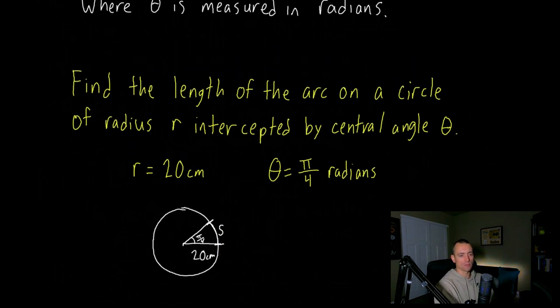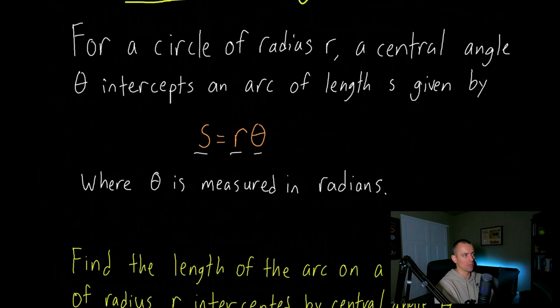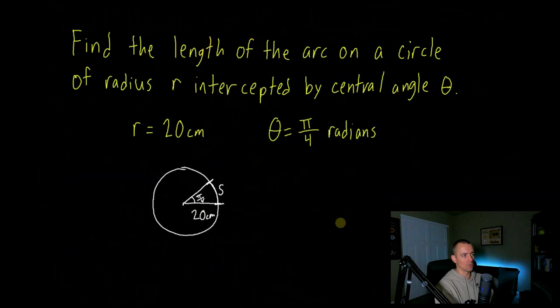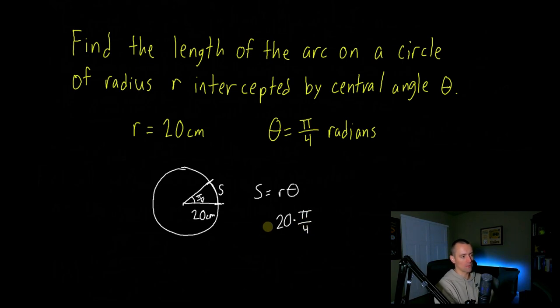So to find that we can use this formula we discussed: s = rθ. In this case we know r is 20 centimeters, so we plug in 20 for r, and θ is π/4, so we plug in π/4 for θ, and that's what our arc length equals.